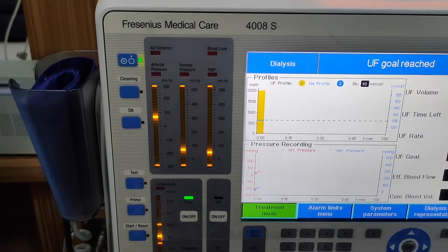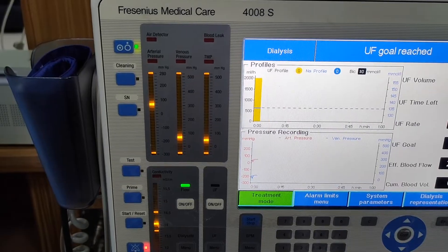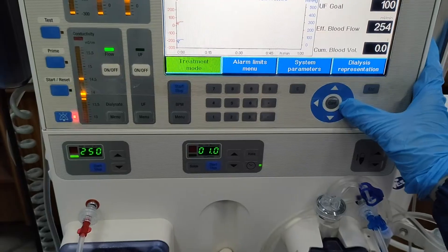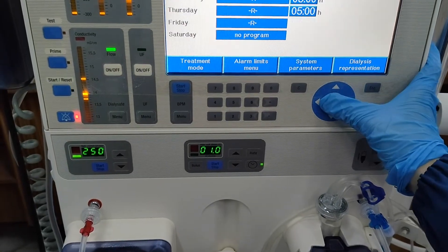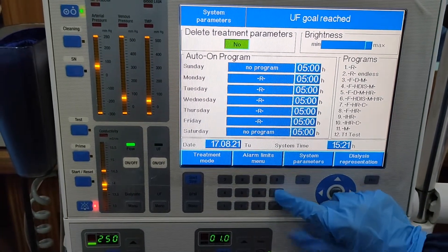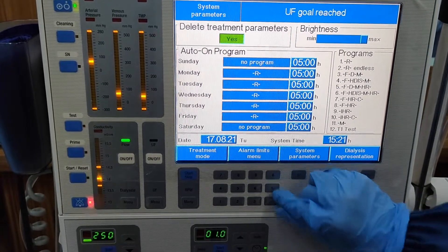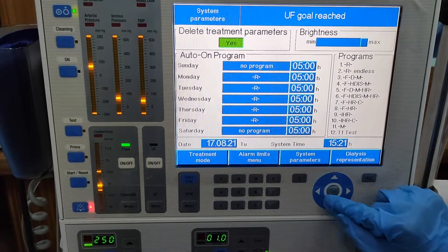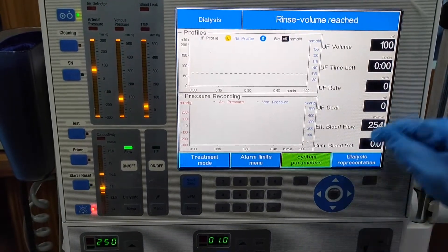Once echo priming is done, the screen will say UF Goal Rich. Then, go to system parameters, press the plus button to select yes. Press confirm to delete the data in echo priming.